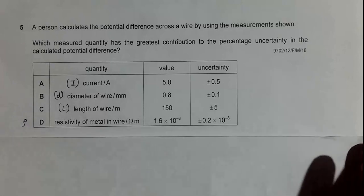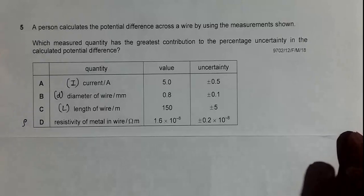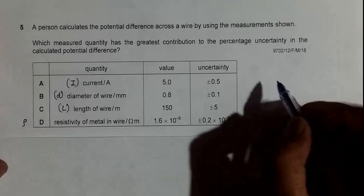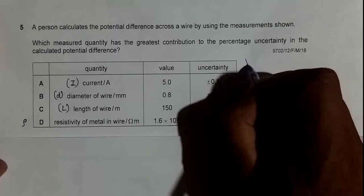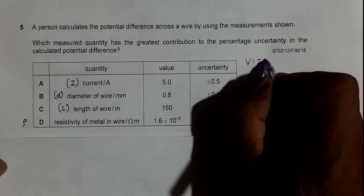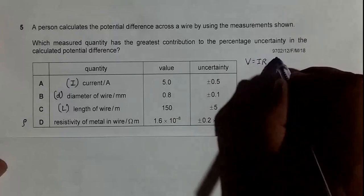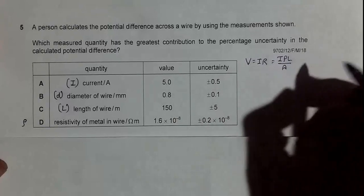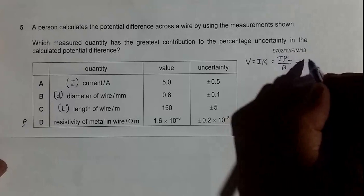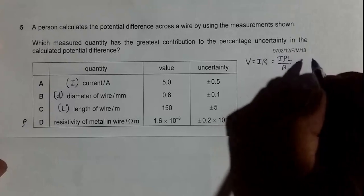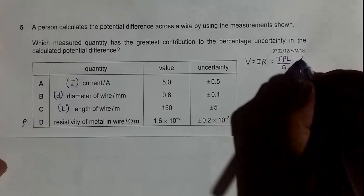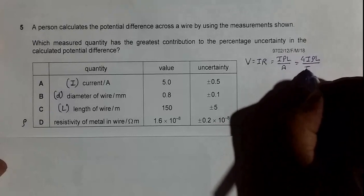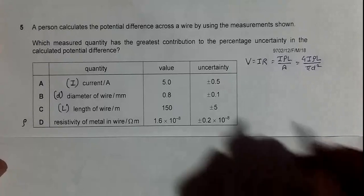We have to find the percentage uncertainty in the calculated potential difference. So let us first write the formula. V equals I into R, which will be equal to IρL by A, and this A will be equal to πD² by 4. So 4 comes up, giving us 4IρL by πD².